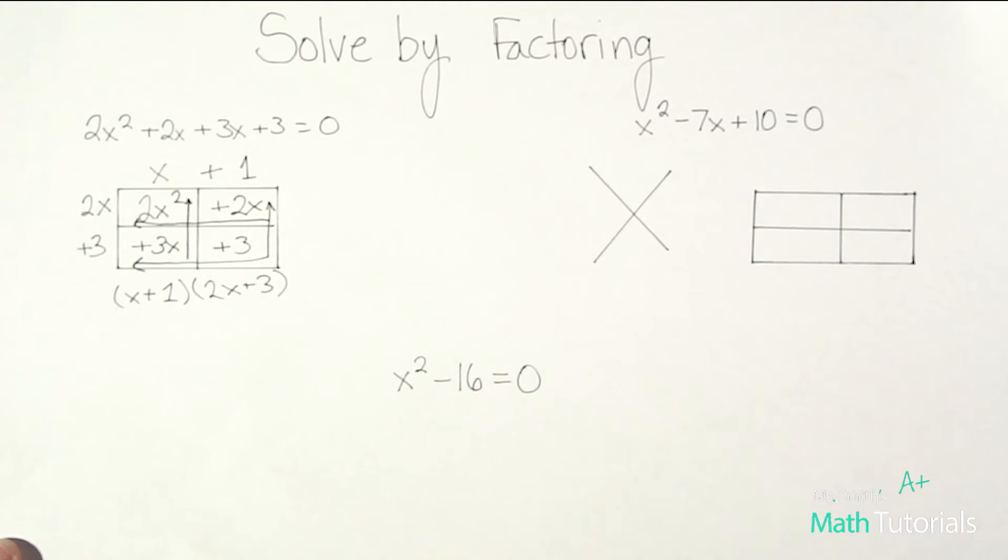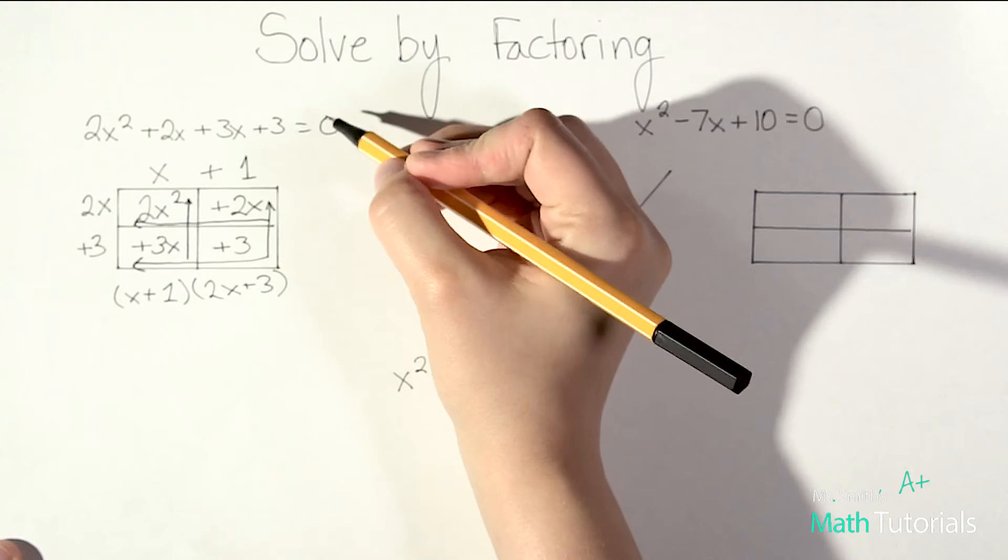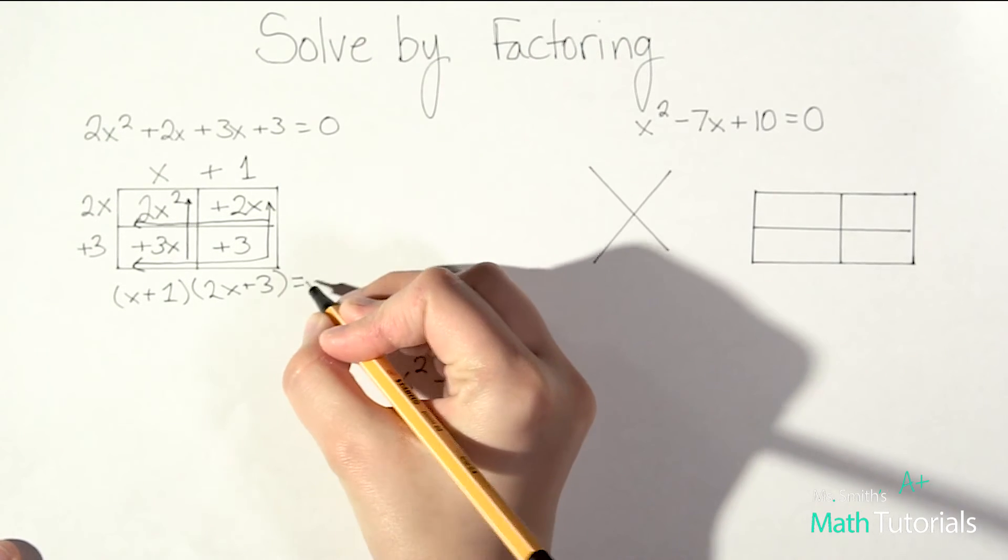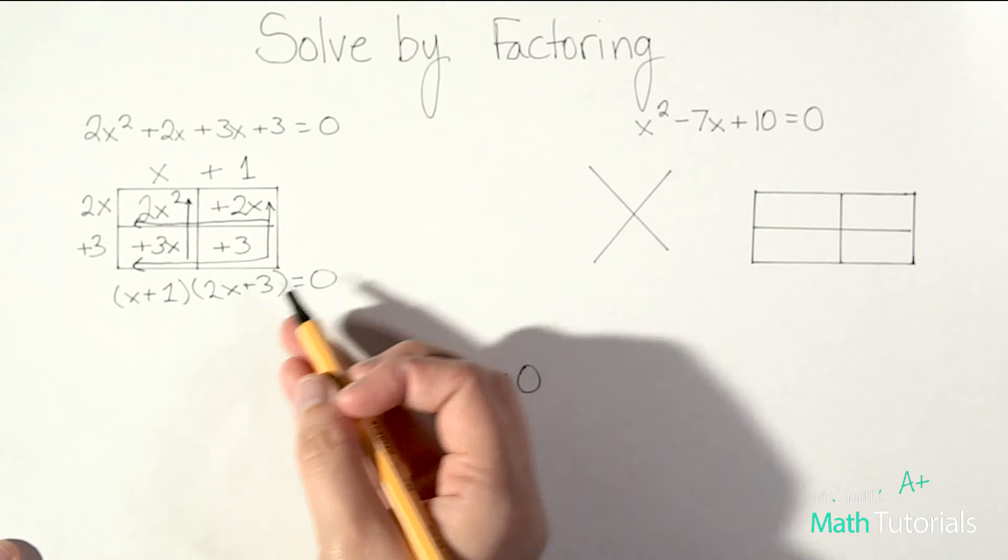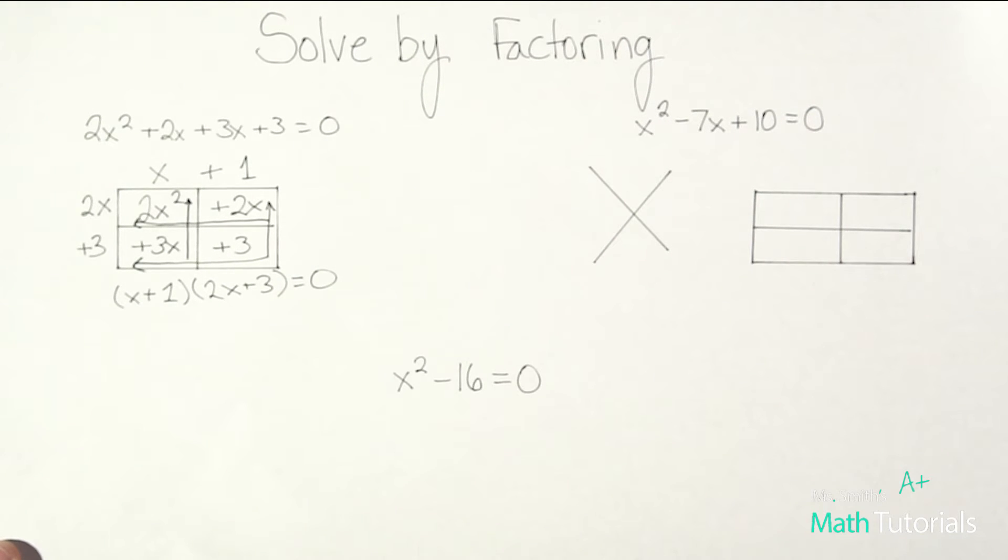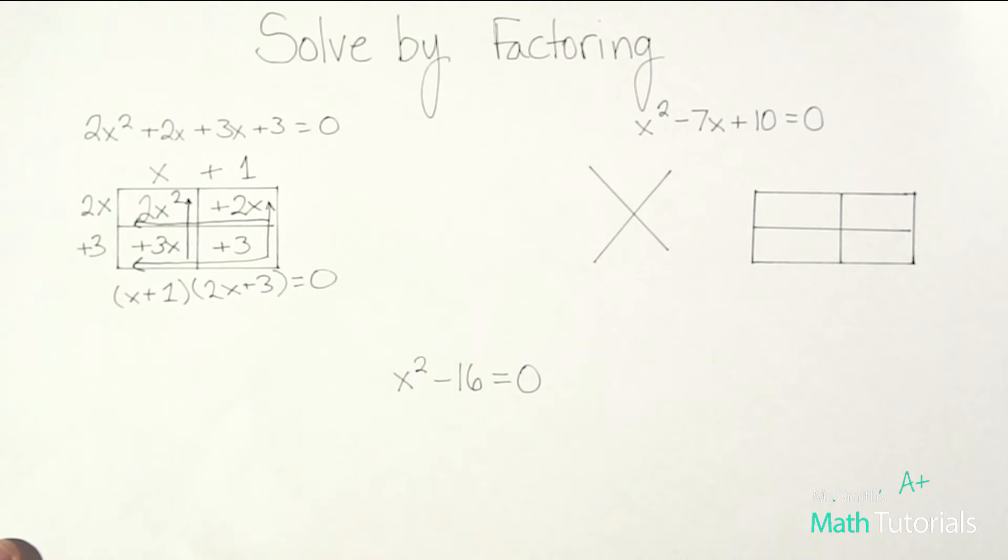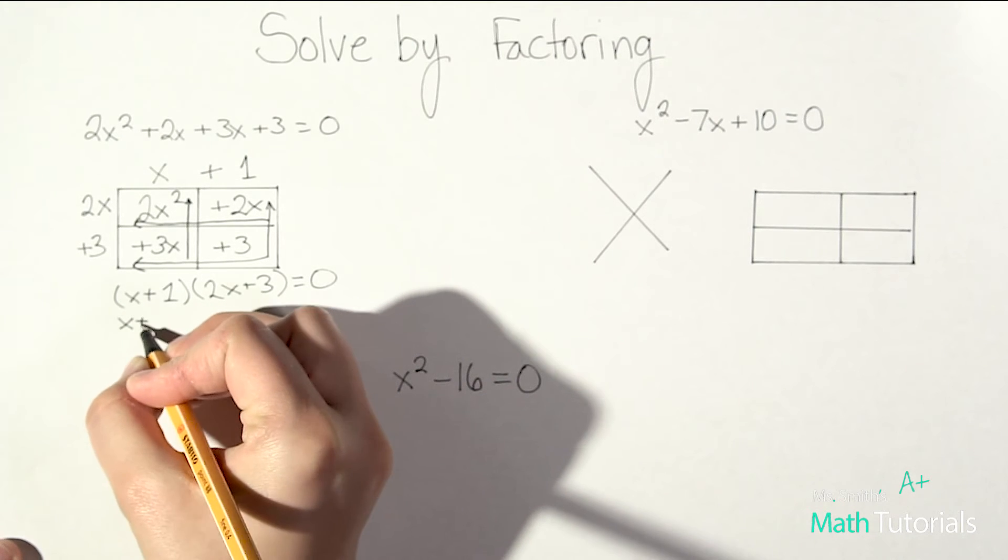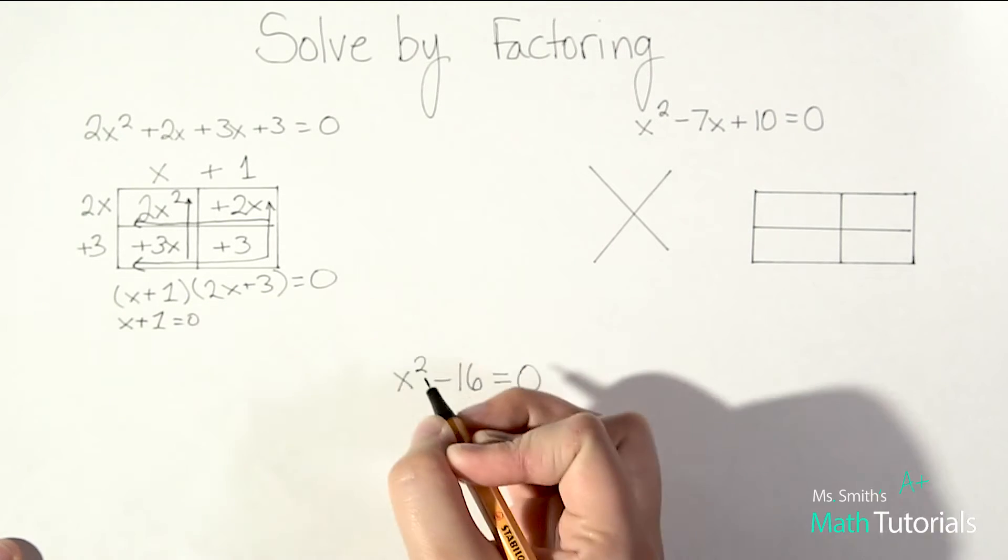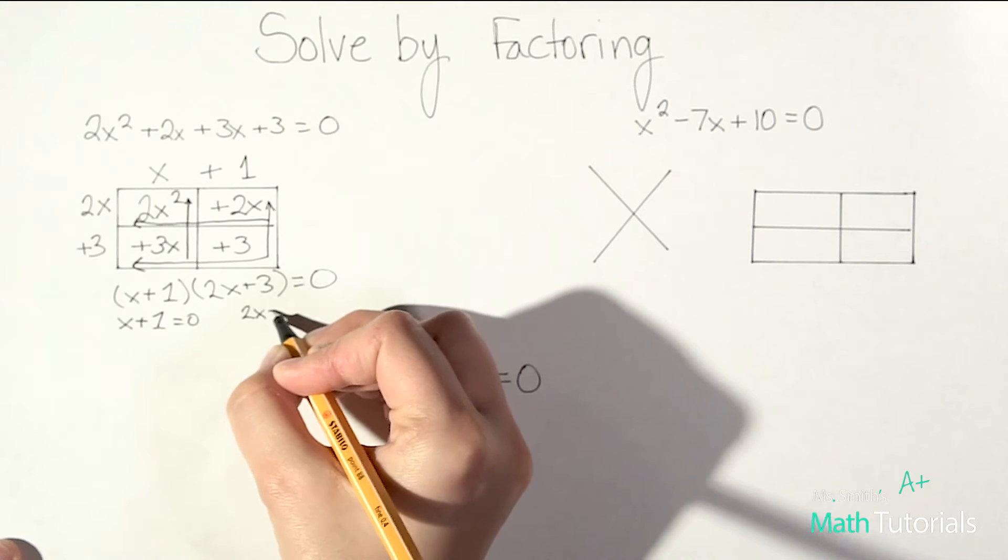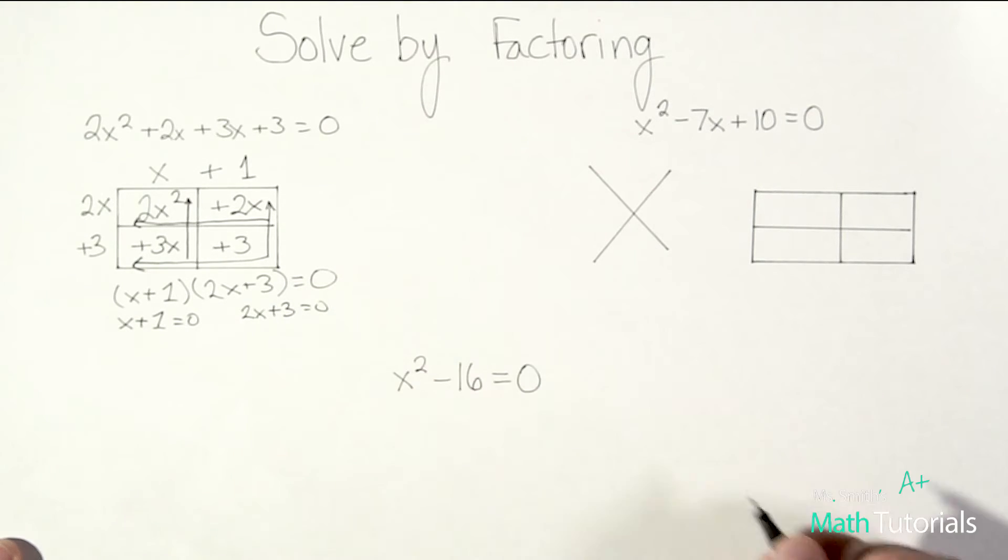And when we were just factoring we stopped there. But we can't do that anymore because of this equals zero. We've got to remember it's these two binomials equal to zero. So I have to take this a step further. In order to solve this I have to take each binomial and set them individually equal to zero. So I've got x plus one equals zero and I've got 2x plus three equals zero.